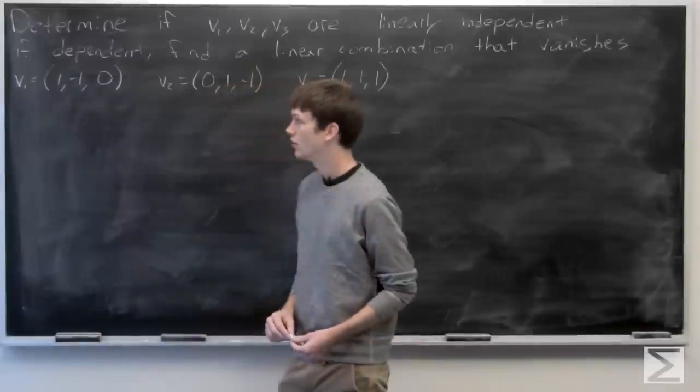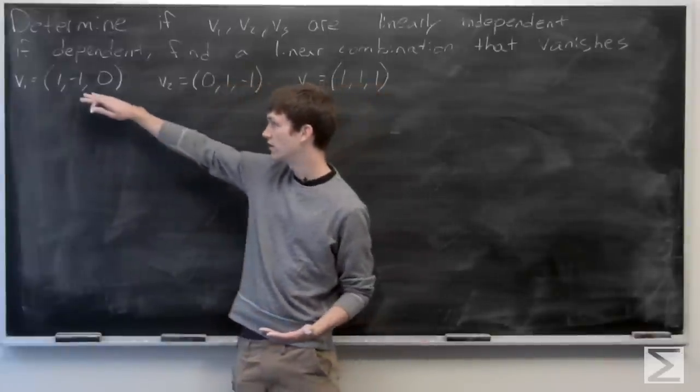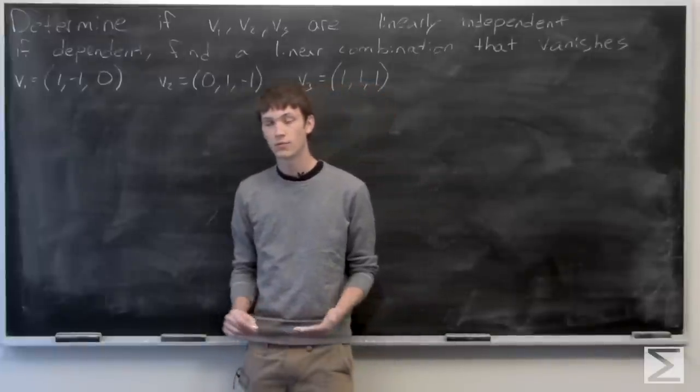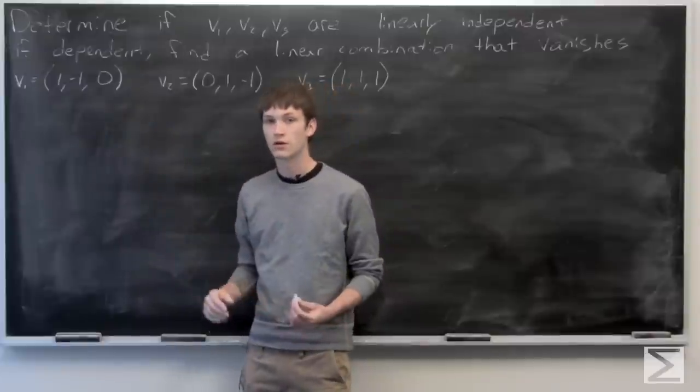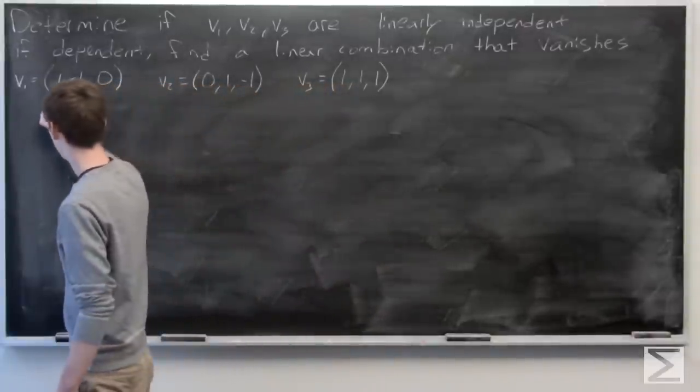We have a corollary that tells us that if the determinant with the columns as the vectors is non-zero, then our vectors are linearly independent. So we'll go ahead and create that matrix.